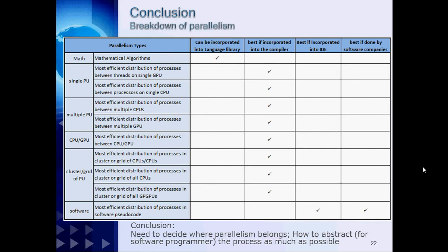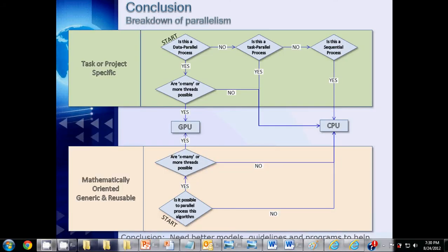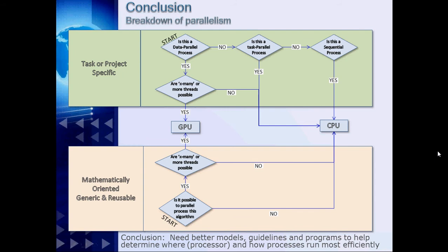This is the last conclusion chart. This last chart shows one very simple decision tree to help one determine whether a process would be best run on GPU or CPU. Hopefully many of the mathematical algorithms and data structures items, which are generic to all software and reusable, can have the GPU-CPU determination taken care of by the language, by the compiler, integrated into the programming language itself. Then hopefully some of the project software-specific code or pseudo-code can be analyzed by other programs to determine the ideal locations for parallelism. The main takeaway here is that there is a need for better models and guidelines as well as programs which can help determine where and how processes run most efficiently.